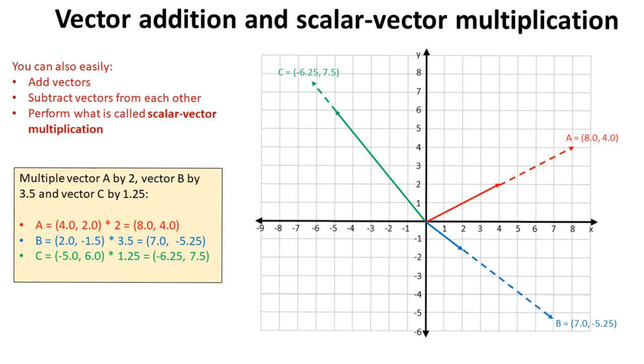And then simply multiplying the distance. So A is multiplied by 2, so 4 by 2 becomes 8 by 4. And so on for vector B and vector C.